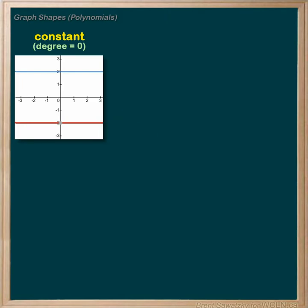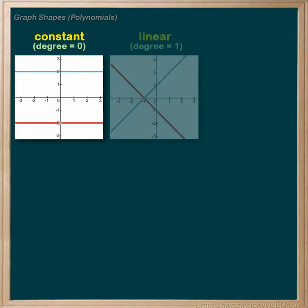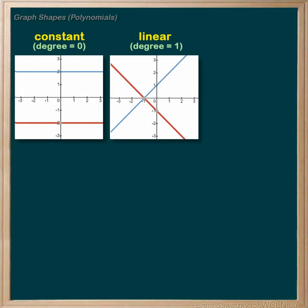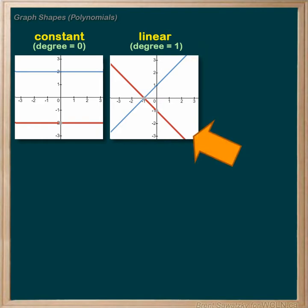Next we move up to a degree of one and we call this the linear relationship. Again, a positive slope in blue and a negative in red — the red is just reflected vertically.